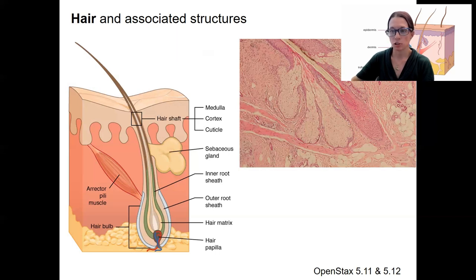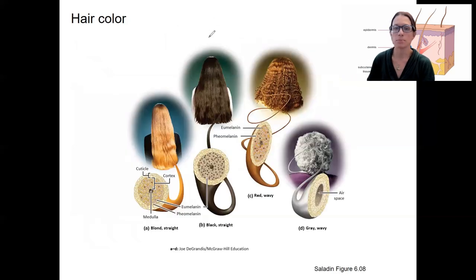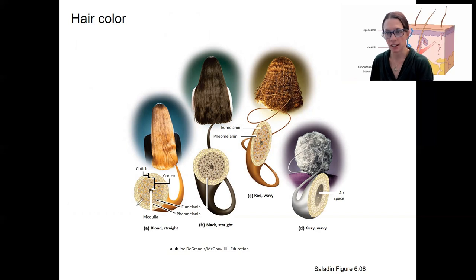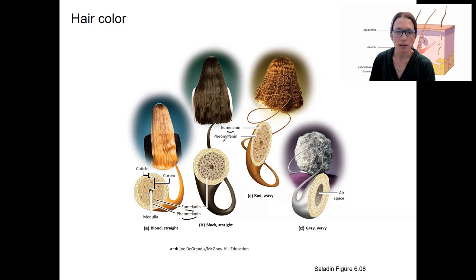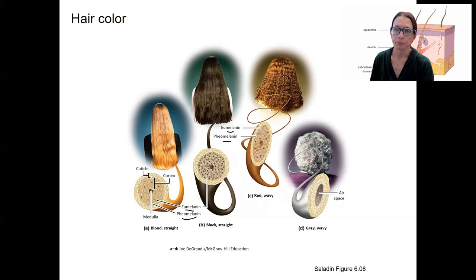Hair color is similar to skin color — it's determined by different types of melanin. These cross sections of hair show the cortex and medulla. There are different subtypes of melanin: eumelanin and pheomelanin being the main types that contribute to different hair colors. As we age, we lose that melanin and those pigments, which is what makes hair gray or white. It's a genetically determined melanin production — both type and amount.